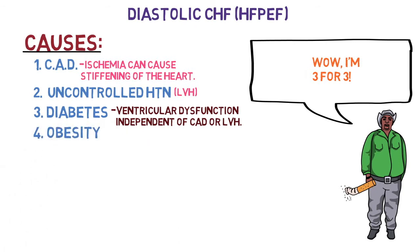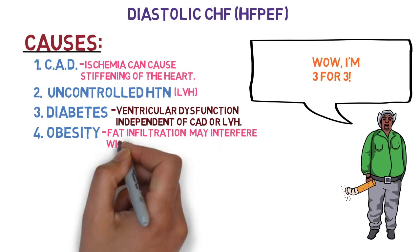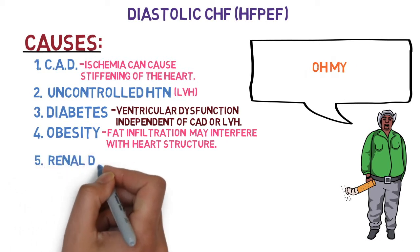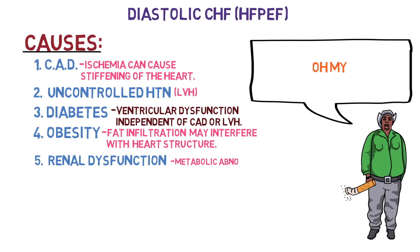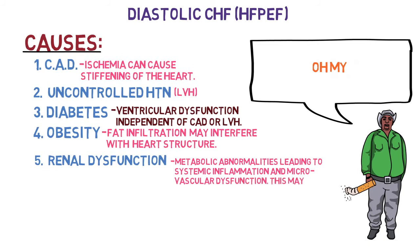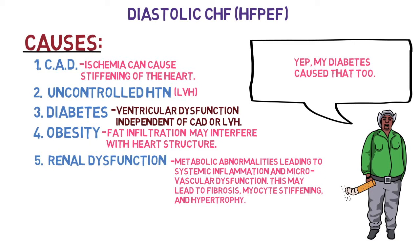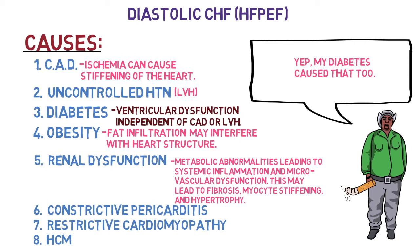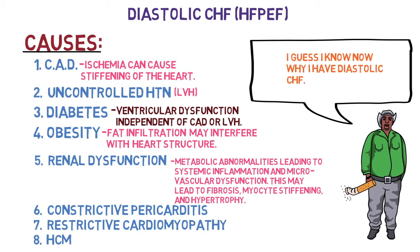Number four, obesity — fat infiltration may interfere with heart structure. Number five, renal dysfunction — metabolic abnormalities leading to systemic inflammation and microvascular dysfunction may cause fibrosis, myocyte stiffening, and hypertrophy. Three additional causes include constrictive pericarditis, restrictive cardiomyopathy, and hypertrophic cardiomyopathy.